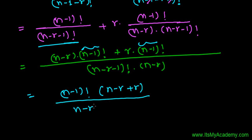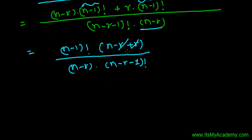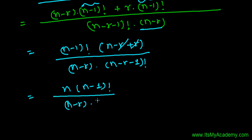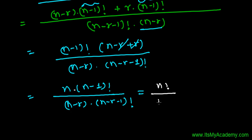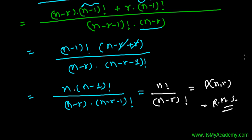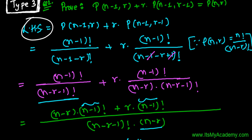The denominator is n minus r times n minus r minus 1 factorial. In the numerator, minus r plus r cancels, leaving just n times n minus 1 factorial, which is n factorial. In the denominator, n minus r times n minus r minus 1 factorial is n minus r factorial. So the result is n factorial divided by n minus r factorial, which is exactly P(n, r) — the right hand side. Proved!